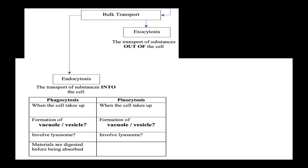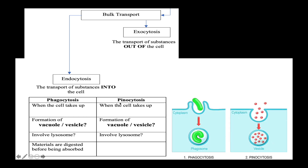Next, we have bulk transport. There are two types of bulk transport: endocytosis, which refers to the transport of substances into the cell, and exocytosis, which refers to the transport of substances out of the cell. There are two types of endocytosis: phagocytosis and pinocytosis. As you can see from the diagram, phagocytosis is when the cell takes up solid substances, meanwhile pinocytosis refers to when the cell takes up solutes from its surroundings.